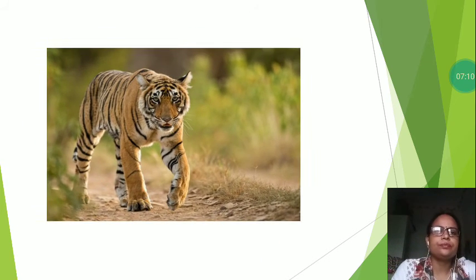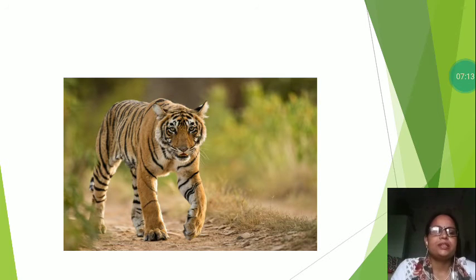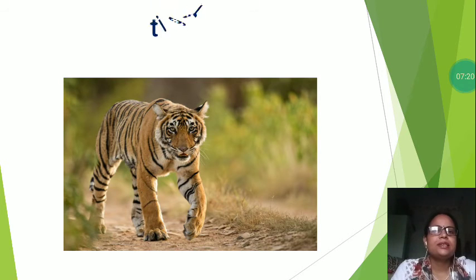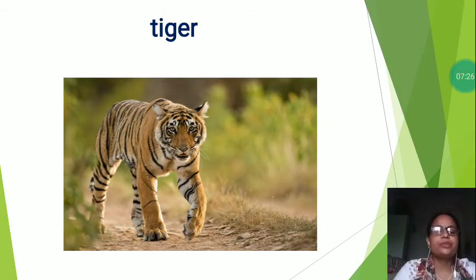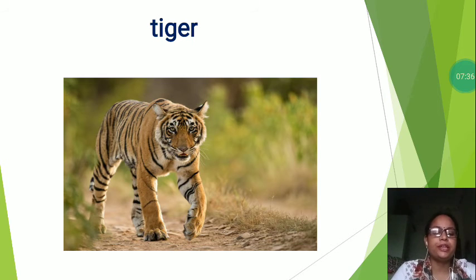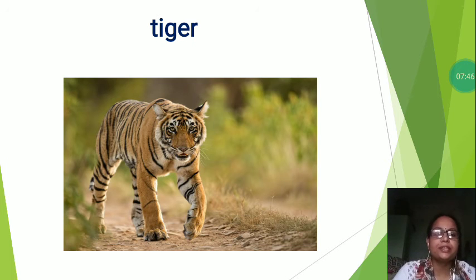Now the next is, tell me dear students, this is a picture of a wild animal. Which wild animal is this? Tiger. T-I-G-E-R. Tiger. So dear students, tiger is a wild animal. It is yellow in color. It is a powerful animal. It has four legs and a tail. Tiger is carnivorous. The baby of a tiger is called a cub. Tiger is the national animal of India. It is very intelligent. You can also see a tiger in the zoo.